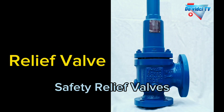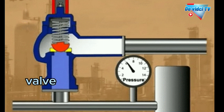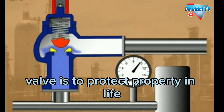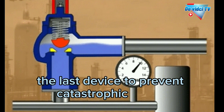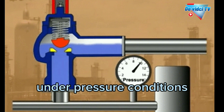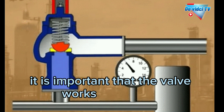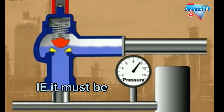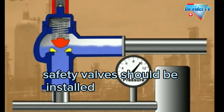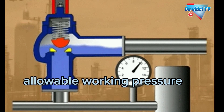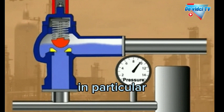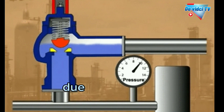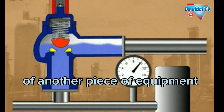The primary function of a safety valve is to protect property and life. Because a safety valve is often the last device to prevent catastrophic failure under pressure conditions, it is important that the valve works at all times — it must be 100% reliable. Safety valves should be installed wherever the maximum allowable working pressure of a system or pressure-containing vessel is likely to be exceeded, in particular under fault conditions due to the failure of another piece of equipment in the system.